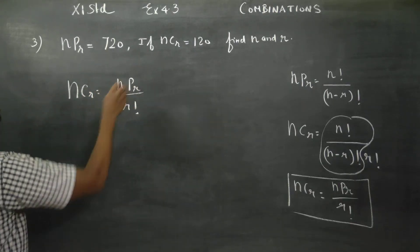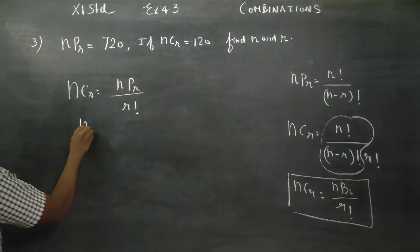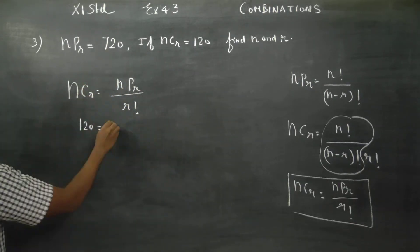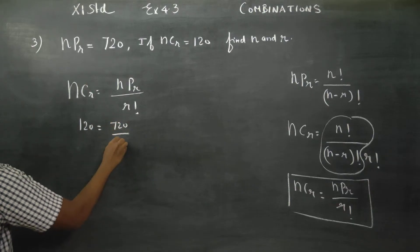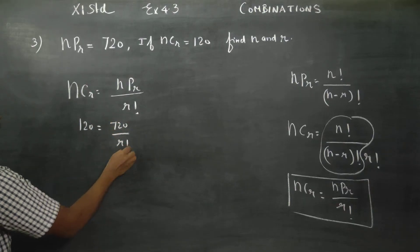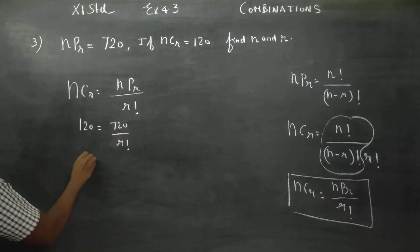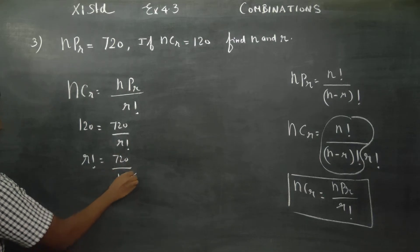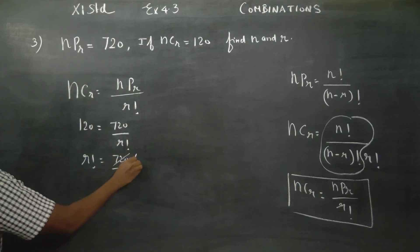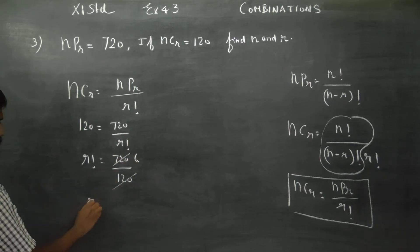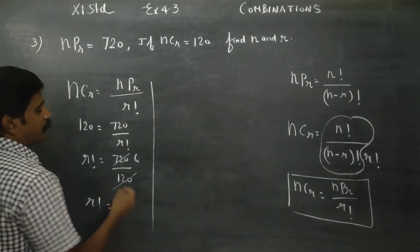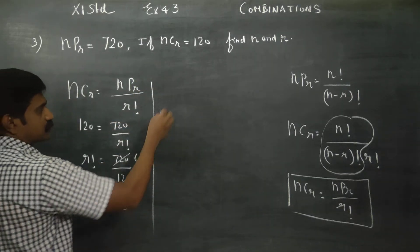What is my NCR? NCR is 120 and NPR is 720. So: 120 is equal to 720 by R factorial. Cross multiplying, R factorial is equal to 720 divided by 120, which is 6. So R factorial is equal to 6.